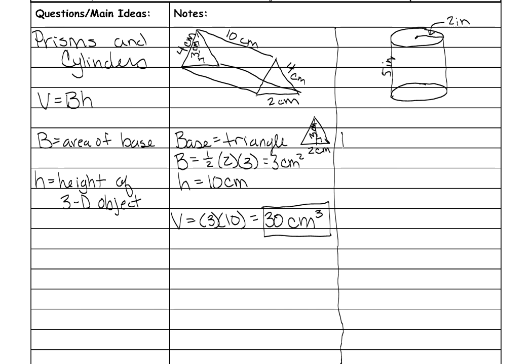So on a cylinder, your base is a circle. So to find the area of my base, that's pi r squared or pi times 2 squared for this circle, which is just 4 pi inches squared is the area of that base. And then my height is 5. So to find the volume, we do 5 times 4 pi,